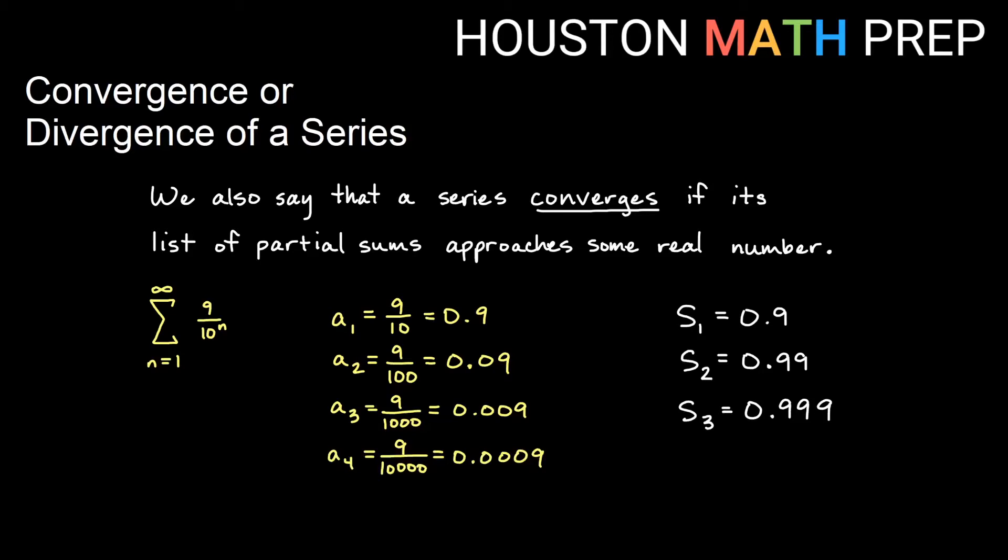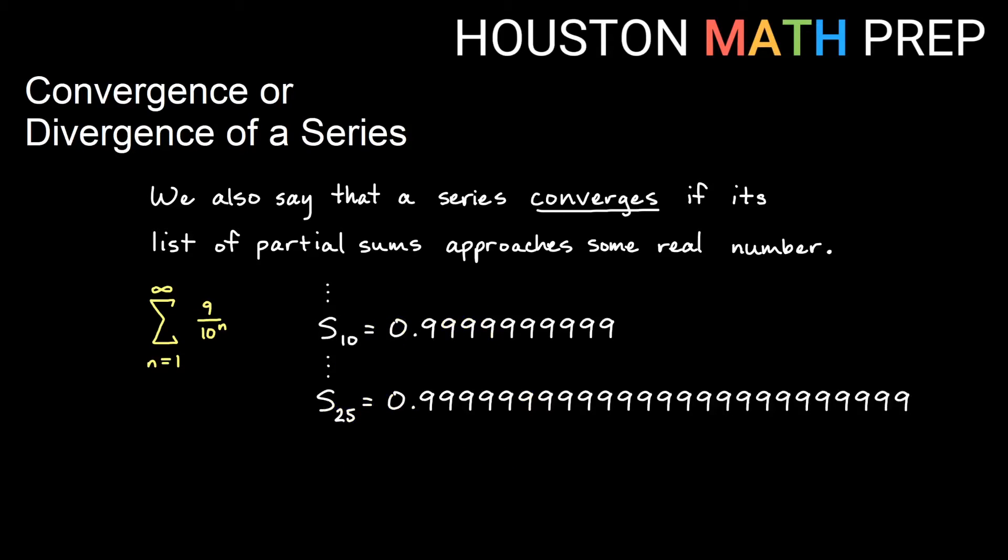If I keep going, I do my fourth term, that's 9 over 10,000, 0.0009. I add that to what I already have, giving me 0.9999. We continue this pattern on to the 10th term, to the 25th term. You can see by the 25th term, we have a lot of nines already, but we're going forever. So what number are we getting close to? Are we approaching some number with our list of partial sums?